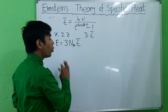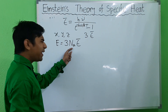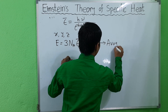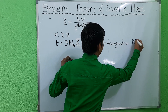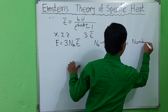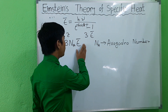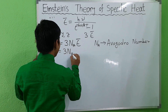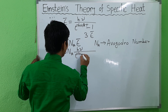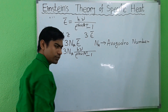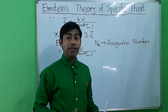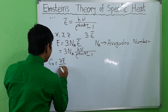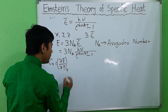So this is the total energy of the solid for one mole. Here N_A is Avogadro's number. Therefore, E = 3N_A × hν / (e^(hν/kT) − 1).